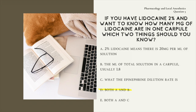The answer is D, both A and B. It is important that we know both how many milliliters are in the carpule and how many milligrams of drug are in the carpule, because we need to multiply these two numbers to find out how many milligrams are in that carpule. Depending on the manufacturer, the carpule can have 1.7 or 1.8 milliliters. A 2% drug equals 2 milligrams per milliliter, 3% equals 3 milligrams per milliliter, and so on. Since there are 1.8 milliliters in a carpule, we multiply to get the total milligrams of drug.